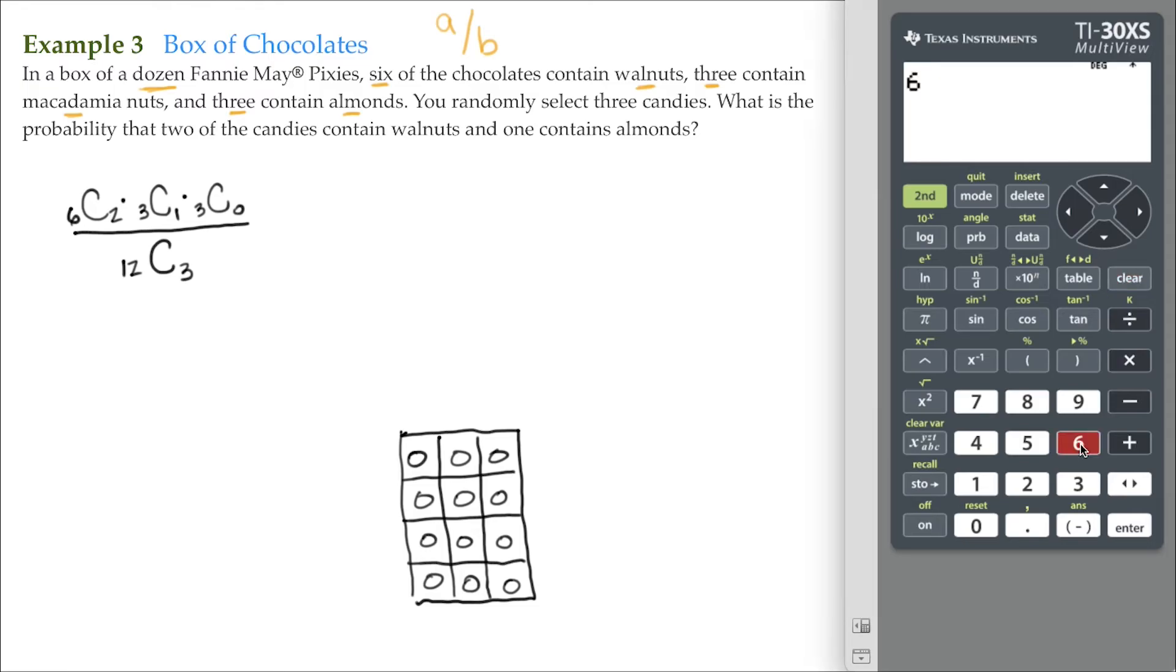I'm going to go 6, back to our probability key. Here is our combination. I'm going to hit 2—6 choose 2. Multiply that to 3 choose 1. Hopefully you know that 3 choose 1 is 3.